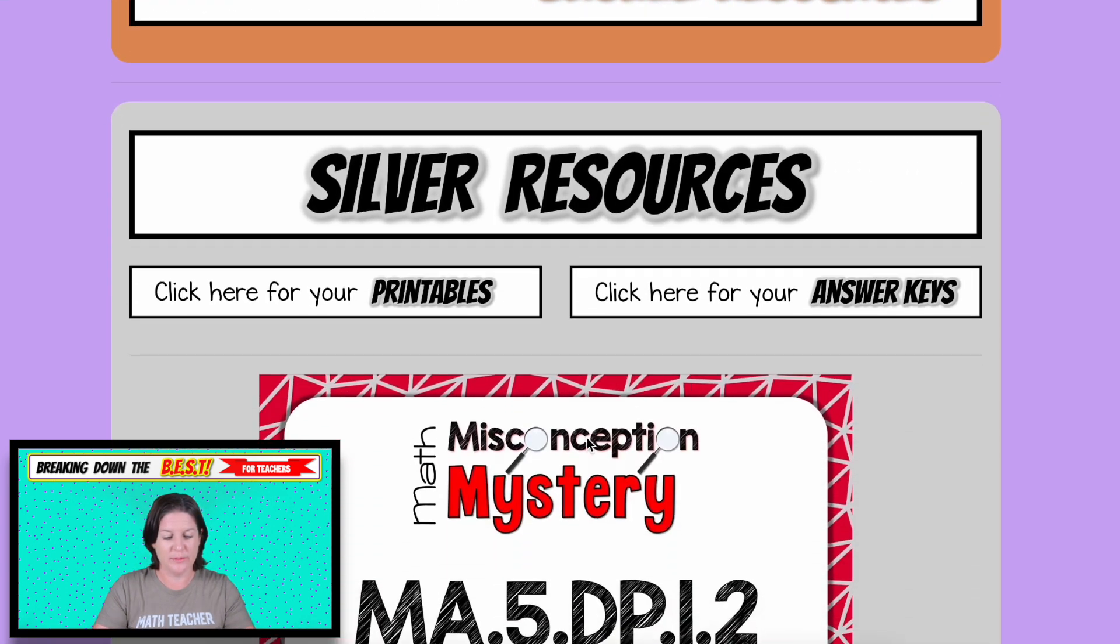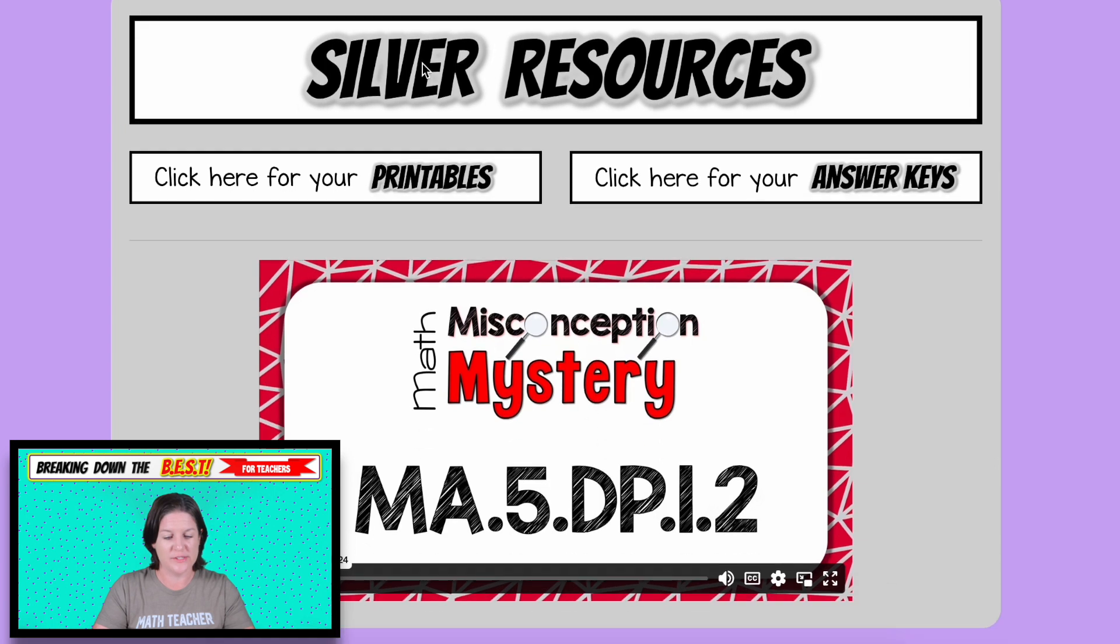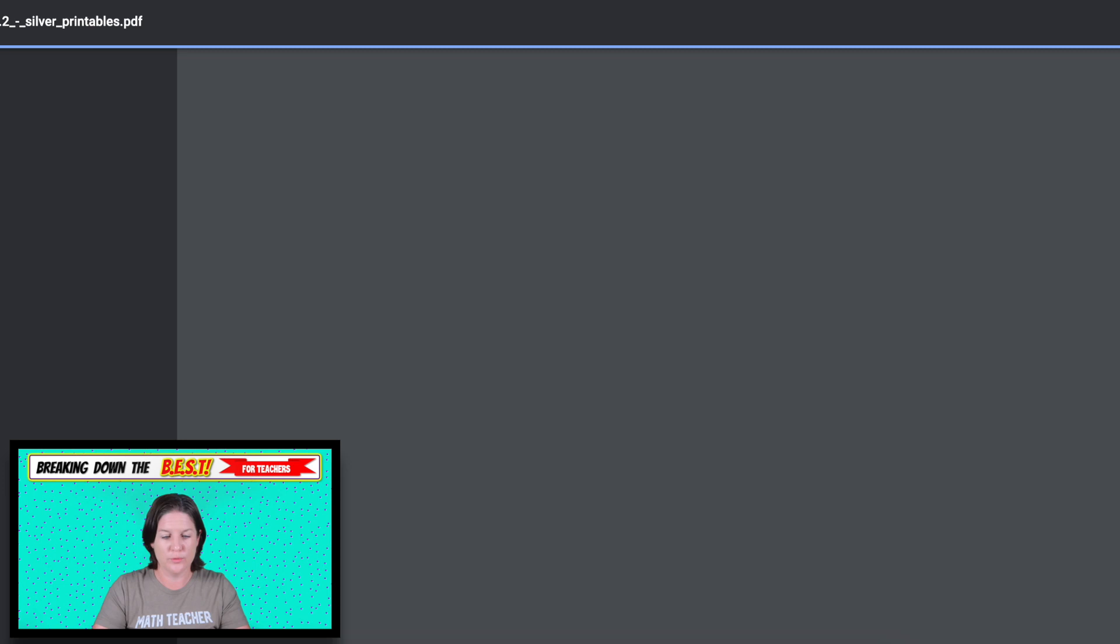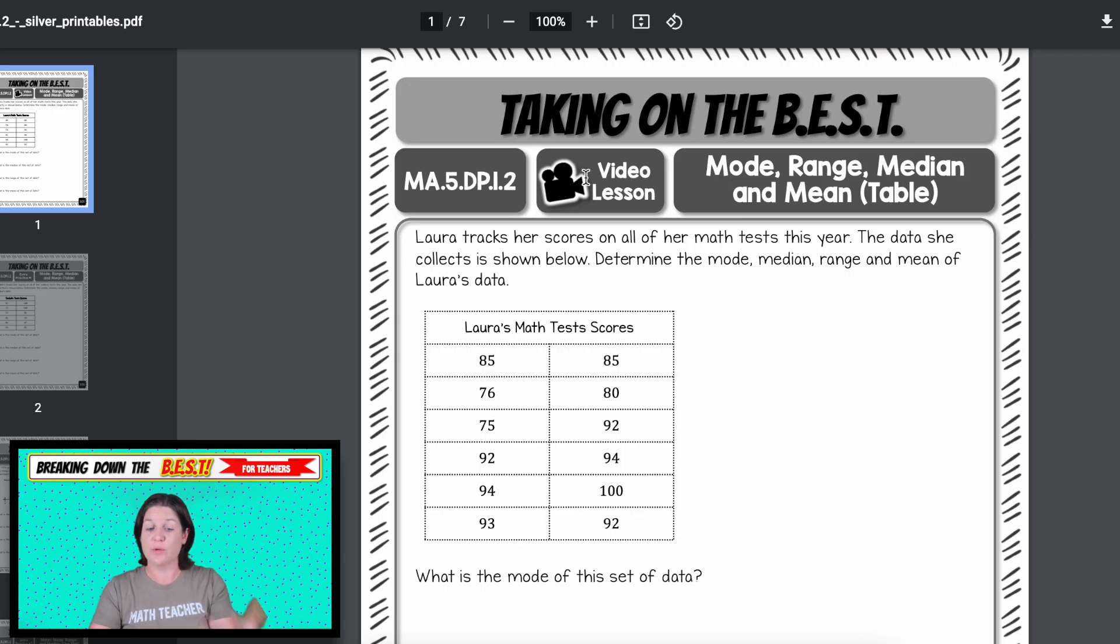So when we click on the silver plan, we can go scroll right, right down to where it says silver resources. Click here for your printables and those will load. And then you'll notice right away, we've got the video lesson for the bronze page right there because it goes video lesson and then extra practice that follows that video lesson, extra practice, video lesson, extra practice.